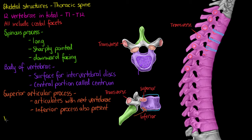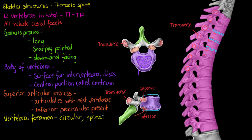The next feature is one of the most important features of our spine: the vertebral foramen. In our thoracic spine, we're going to find that this vertebral foramen is circular shaped. It's going to house and protect our spinal cord — allowing passage of the spinal cord and protecting it as well. The spinal cord will pass through here, and our vertebra is going to protect it.